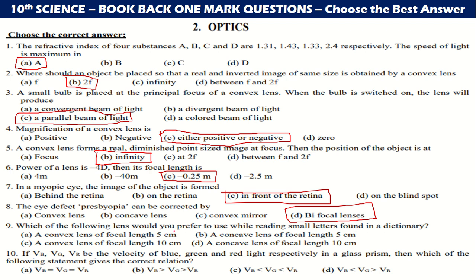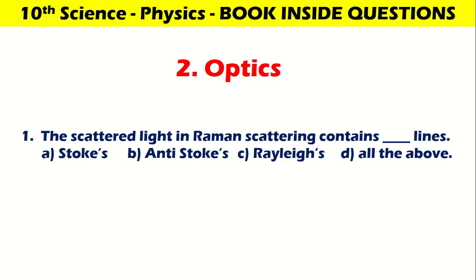Which of the following lens would you prefer to use while reading small letters found in dictionary? A convex lens of focal length 5 centimeter. If VB, VG, VR be the velocity of blue, green and red respectively in a glass prism, then which of the following statement gives the correct answer? VB less than VG less than VR. Let us go to the book inside question. We have only one question for this optics chapter. All of the above is the correct answer.